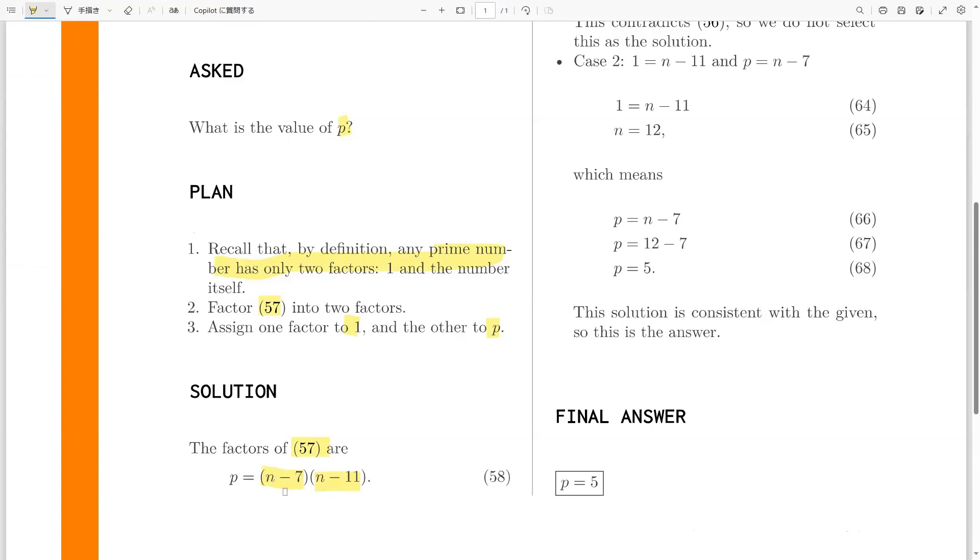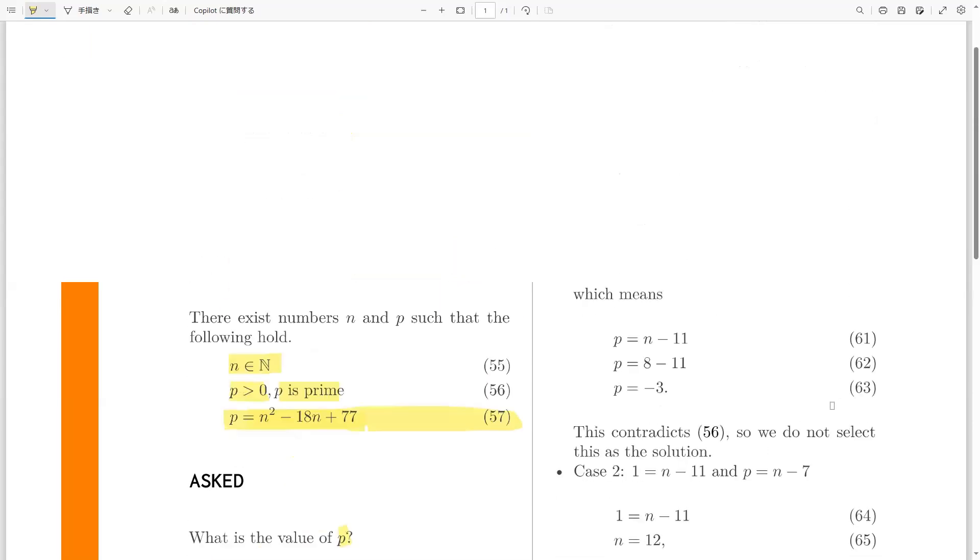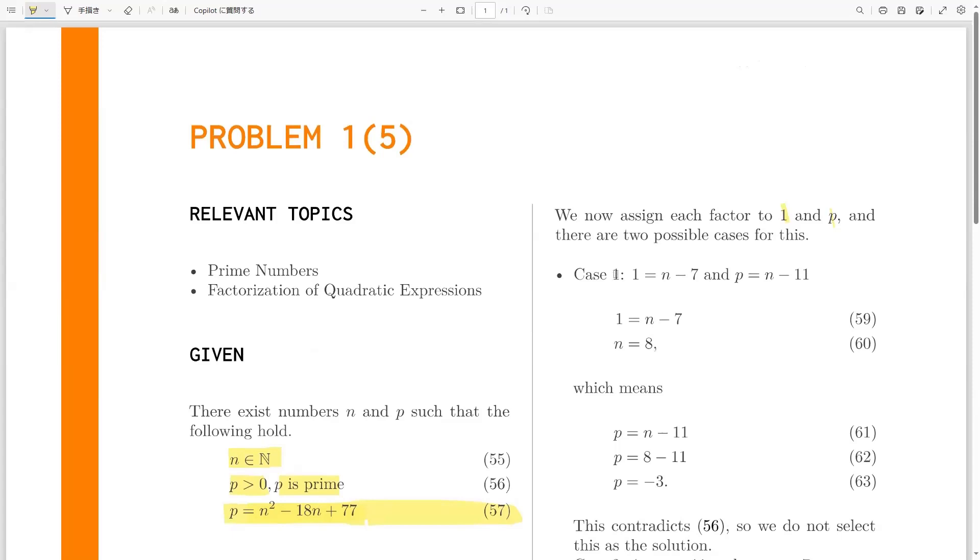there are two ways to assign the numbers to these factors. So either we assign 1 to n minus 7, and consequently, p to n minus 11. Or we can do the other way around. We can assign 1 to n minus 11, and then we can assign p to n minus 7. Those are two possible cases, and we'll try to do both. So first, let's assign 1 to n minus 7, and p to n minus 11.